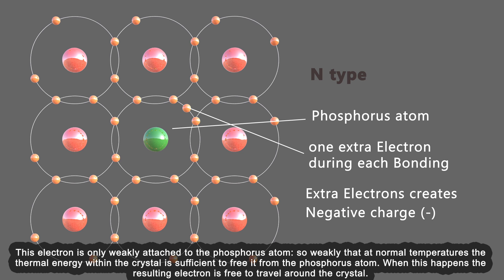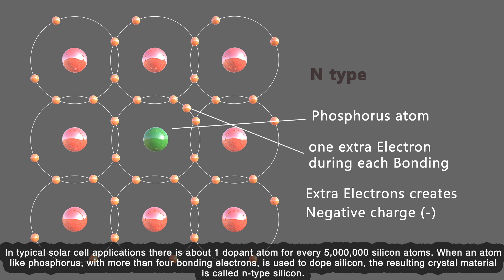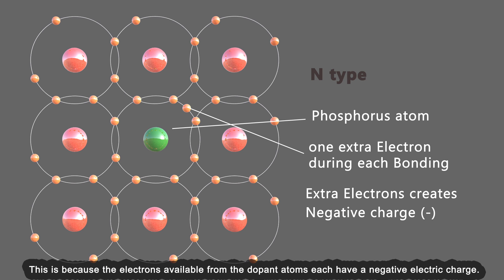When this happens, the resulting electron is free to travel around the crystal. In typical solar cell applications, there is about one dopant atom for every five million silicon atoms. When an atom like phosphorus with more than four bonding electrons is used to dope silicon, the resulting crystal material is called n-type silicon. This is because the electrons available from the dopant atoms each have a negative electric charge.